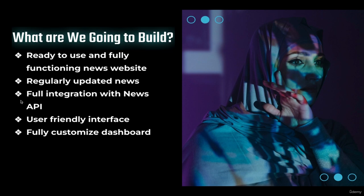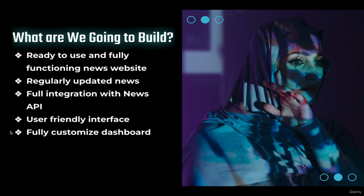The third feature: we're going to have full integration with NewsAPI — I'll guide you on how to generate your own API key, which is used as a tool to connect our news website with the API. The fourth feature: we're going to build a user-friendly interface, which will be tested in the testing phase by positioning ourselves as users and assessing the interface. The fifth feature: we're going to build a fully customized dashboard, enabling users to customize it based on their needs and personal preferences.